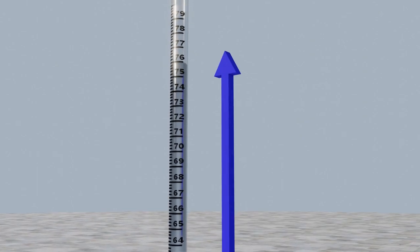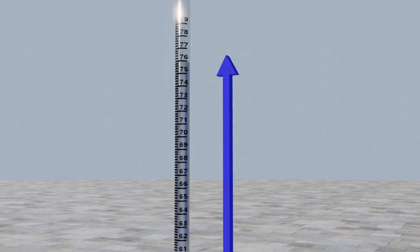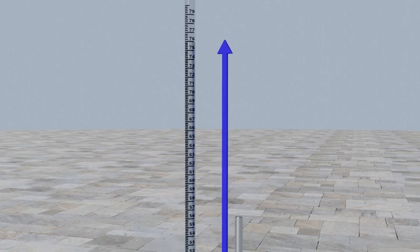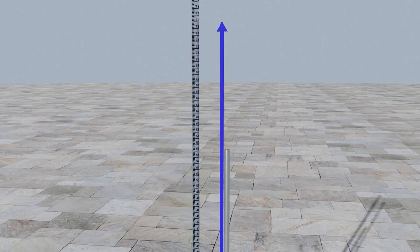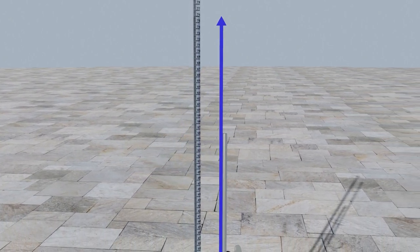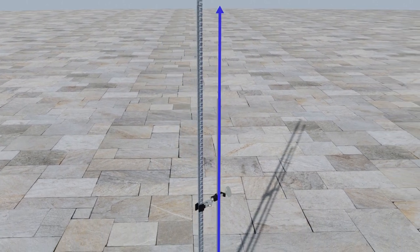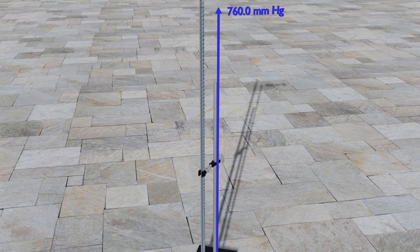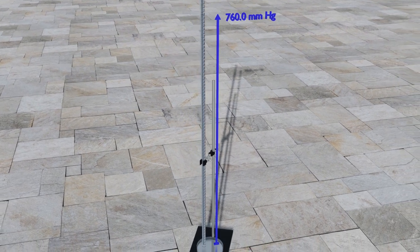The pressure exerted by the atmosphere can be read from the height or distance between the surfaces of the liquid in the dish and tube. This distance depends on the altitude of the barometer and on the liquid used, which is usually mercury. The height of a mercury column at sea level, where the elevation is 0 meters, is 760 millimeters. This is defined as standard atmospheric pressure.